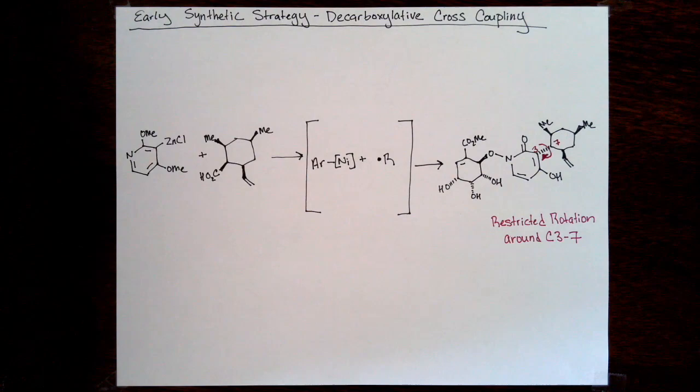In the previous syntheses, they're not trying to attach that ring C with those three cis substituents. Instead, they've gone after less sterically hindered systems, or they formed that ring after making that C3-C7 bond coupling. Going after that direct cross-coupling was ambitious to say the least. The fact that they were able to identify a system that gave them 9% yield is pretty impressive.